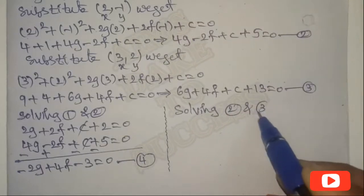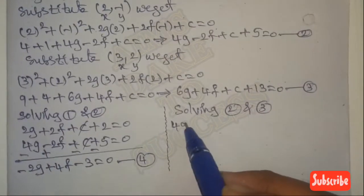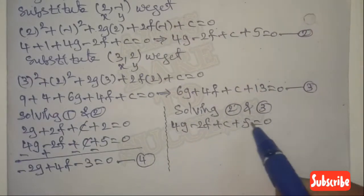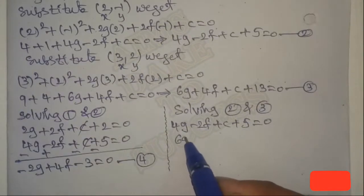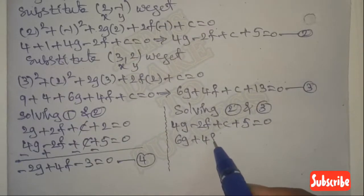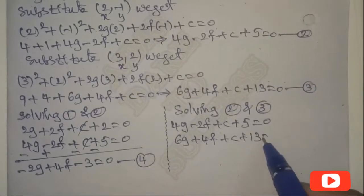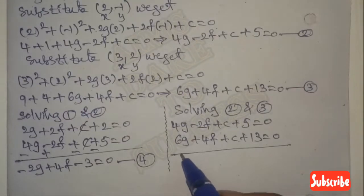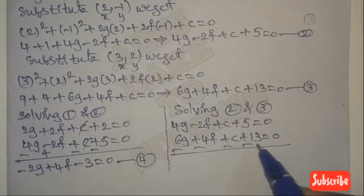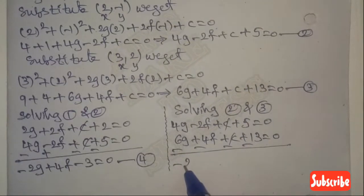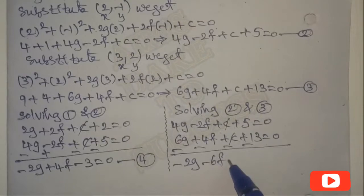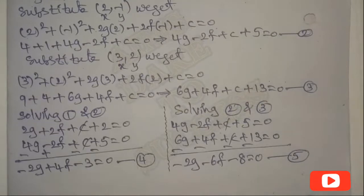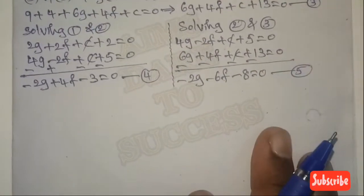Now solving Equation 2 and Equation 3: Eq2 is 4G - 2F + C + 5 = 0, Eq3 is 6G + 4F + C + 13 = 0. Subtracting to remove C: 4G - 6G is -2G, -2F - 4F is -6F, 5 - 13 is -8, so -2G - 6F - 8 = 0. Let this be Equation 5.